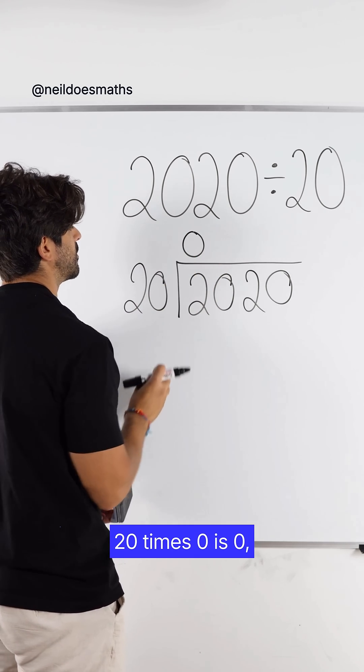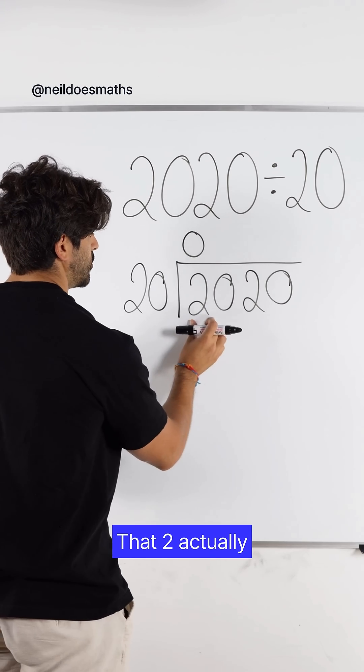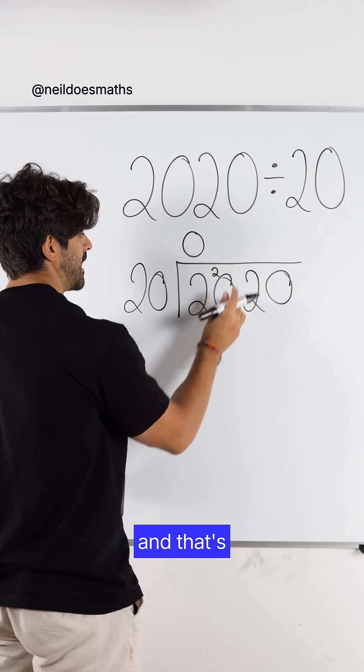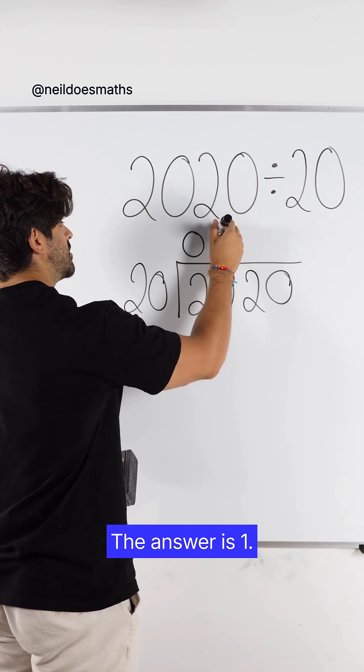And then we say 20 times 0 is 0, but we wanted 2. The remainder is 2. That 2 actually carries on to the next number. And that's our 20. How many 20s go into 20? The answer is 1.